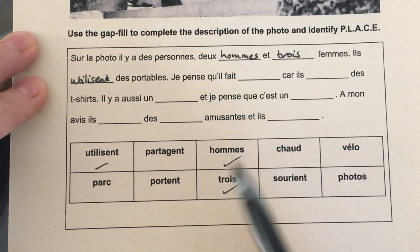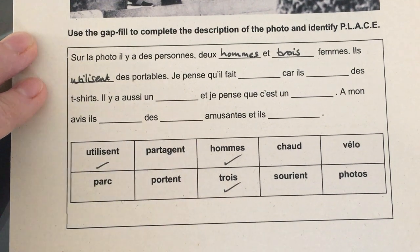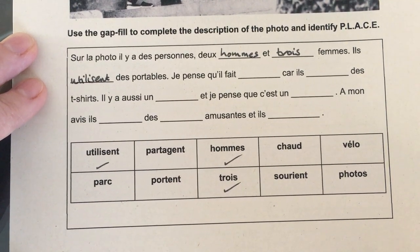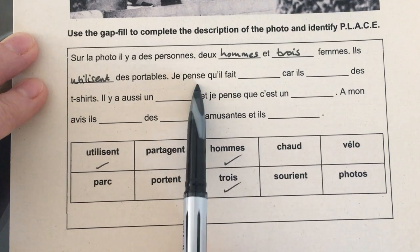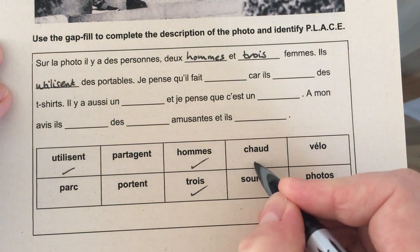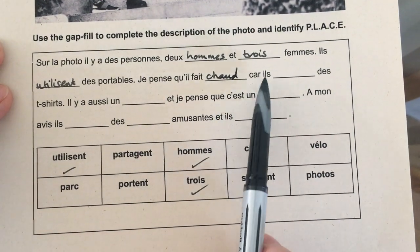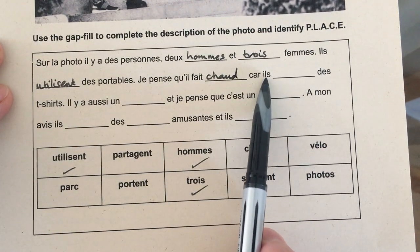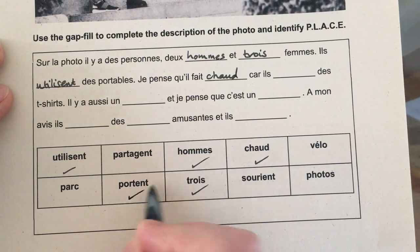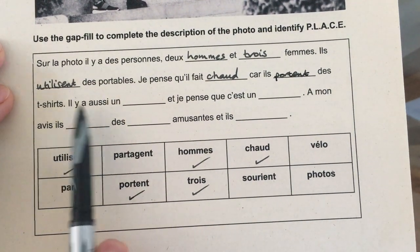'Je pense qu'il fait' — when we use this verb 'il fait', we are generally talking about the weather. I quite like talking about the weather in the photo card if it's obvious and they're outside; you can add a line about the weather. So here we are talking about the weather: 'Je pense qu'il fait chaud' — it is hot. And then I'm going to explain why I think that it is hot: 'Car ils portent des t-shirts' — because they are wearing t-shirts.